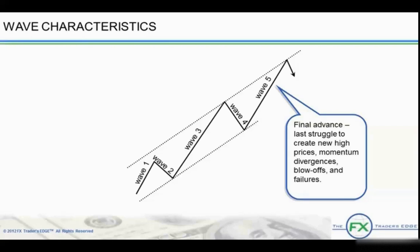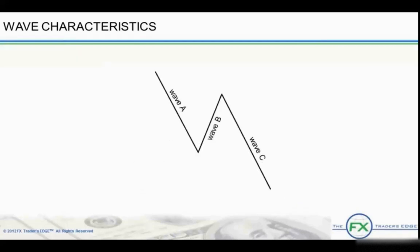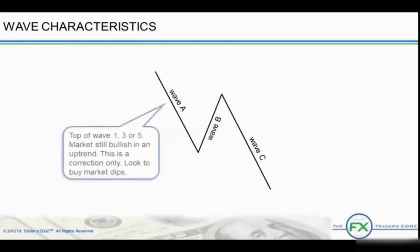In the currency markets, fifth-wave failures are often present, as the fifth wave fails to make a new high above wave three because there are too many participants looking for that last move up. Corrective waves have their own characteristics as well. The wave A kicks off the corrective move. Whether it's the second, fourth, or simply the ABC following the larger five-wave sequence, the characteristics are the same. This is the wave where traders are convinced that this is just a simple pullback before the next leg of the move up in the case of an uptrend. The A wave sets the tone for the B wave move.